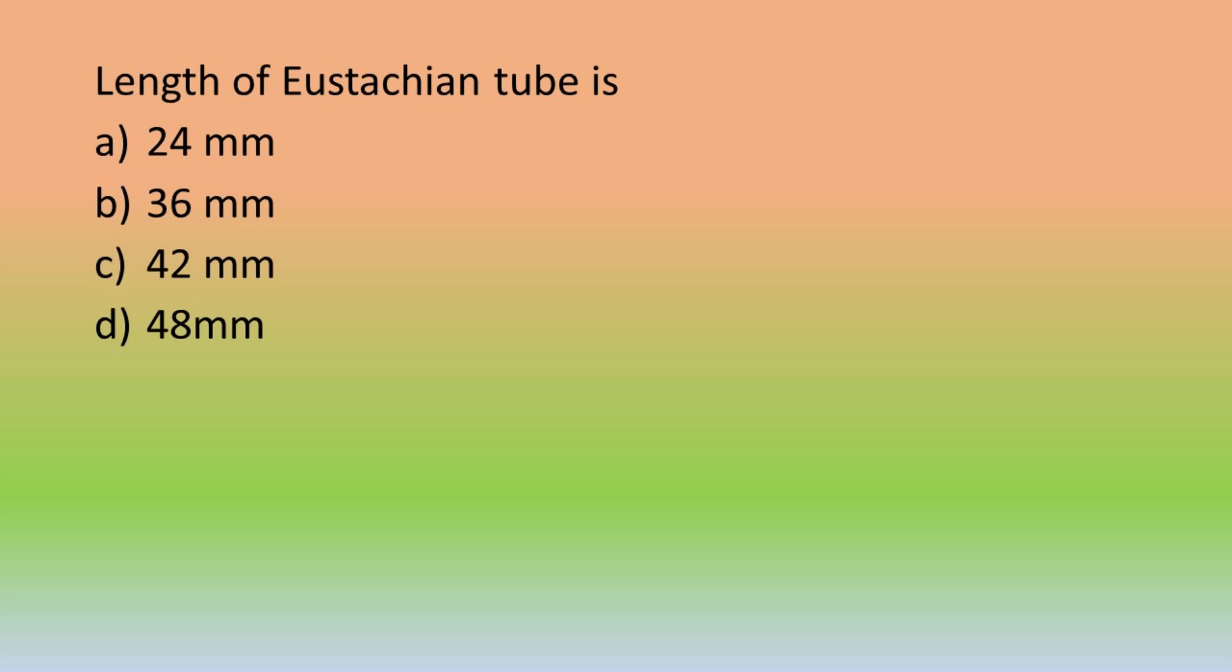Let's solve this MCQ guys. Length of the Eustachian tube is: Option A 24mm, Option B 36mm, Option C 42mm, Option D 48mm.